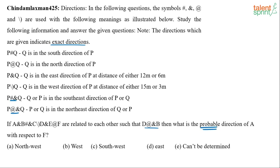Let's work through this step by step. A ampersand B — ampersand means the second person is in the east direction of the first. So B is in the east direction of A, at a distance of either 12 or 6 meters. So we place A here and B to the east of A.